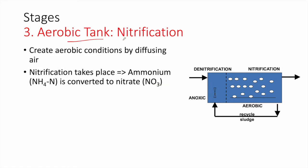Next, in the aerobic tank, we have nitrification. Here we create aerobic conditions by diffusing air using air diffusers and air blowers. Notice there is a lot of mechanical equipment in an MBR wastewater treatment plant. During nitrification, ammonium is converted into nitrate. You might ask: we already removed the nitrate in the anoxic stage, and now we have formation of nitrate again — this is why we recirculate some of the water back into the anoxic tank to remove it.